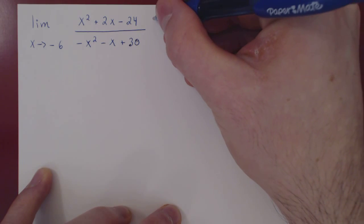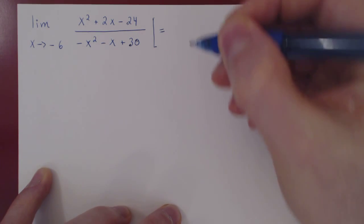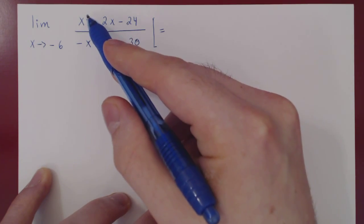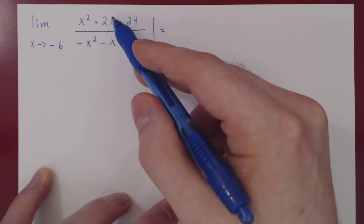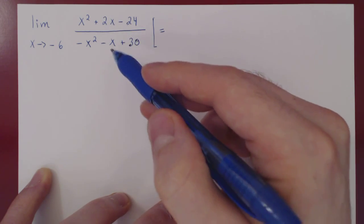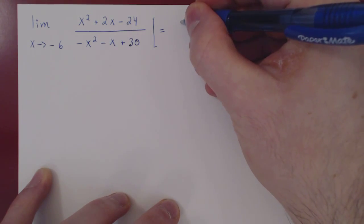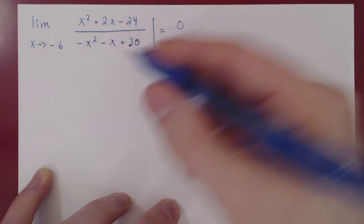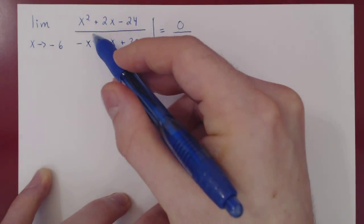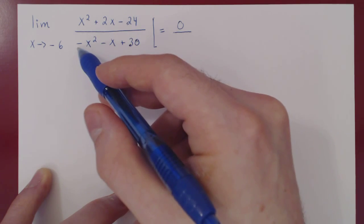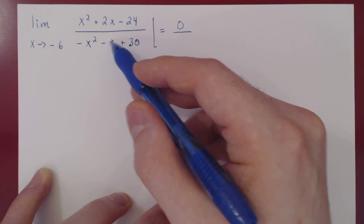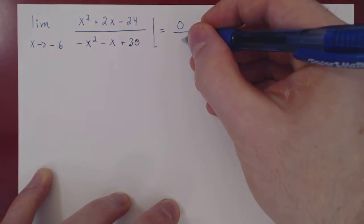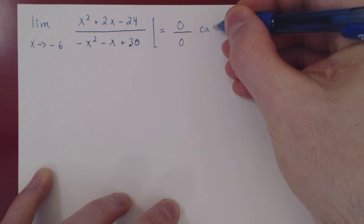As always when considering a limit, we look at what kind of case we're dealing with. As x goes to negative 6, x² goes to 36, and 2x goes to -12. So -12 - 24 = -36, which gives us 0 in the numerator. For the denominator: -36, and negative of -6 is +6, giving us -30 + 30 = 0. So we have a 0 over 0 indeterminate case.